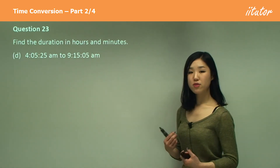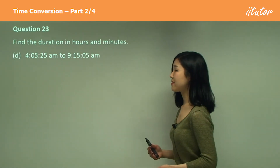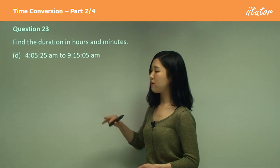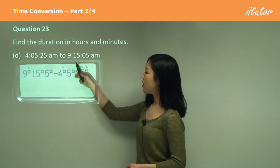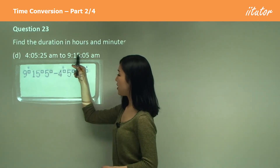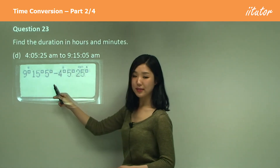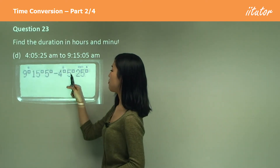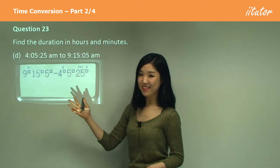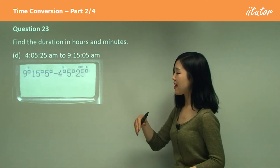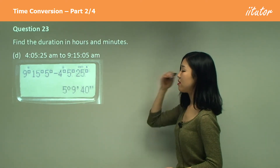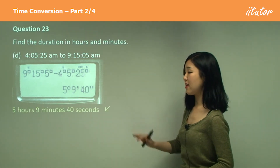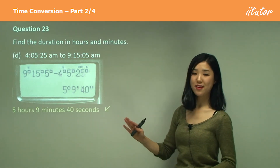This time we have seconds involved, but we do the exact same thing. There's no p.m., so no conversion needed. Enter 9°15'5" minus 4°5'25" and press Enter. You should get 5 hours, 9 minutes, and 40 seconds — that's the time duration.